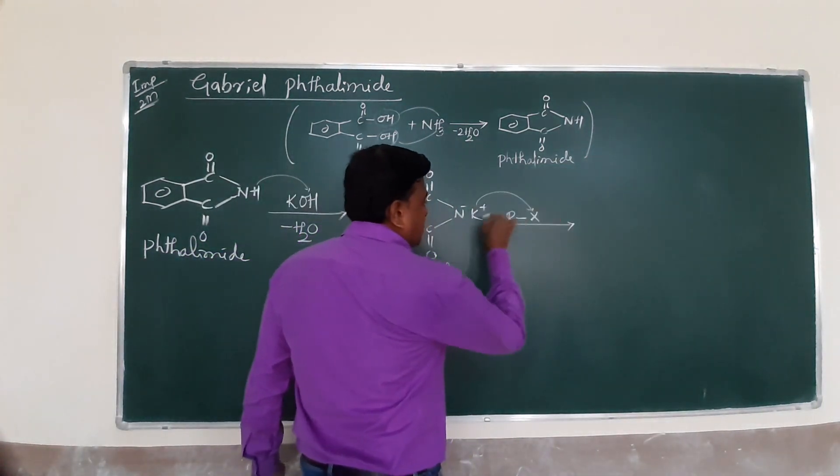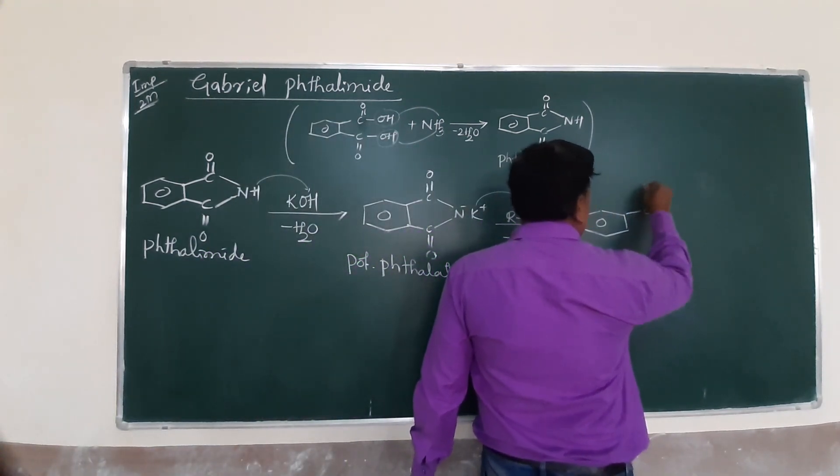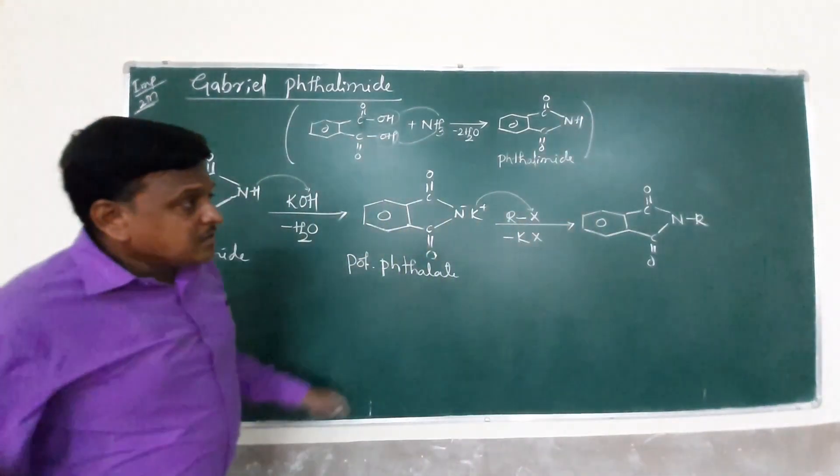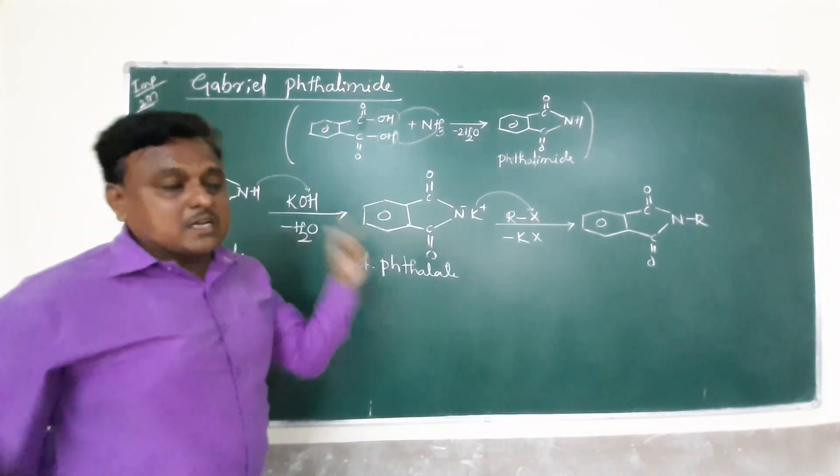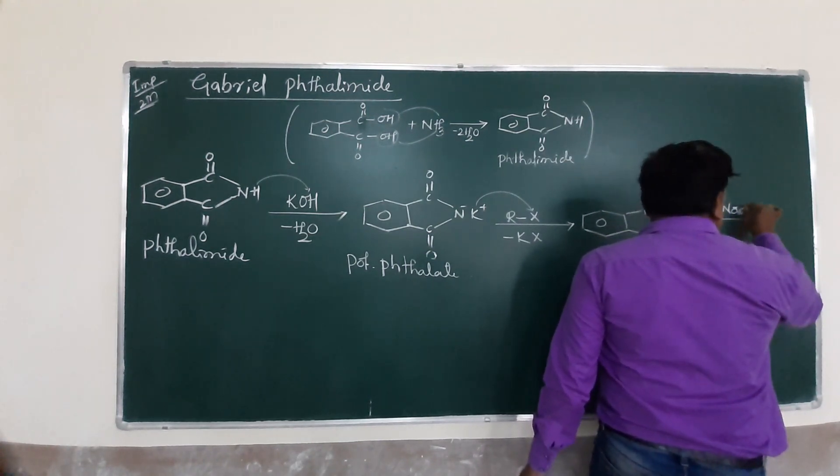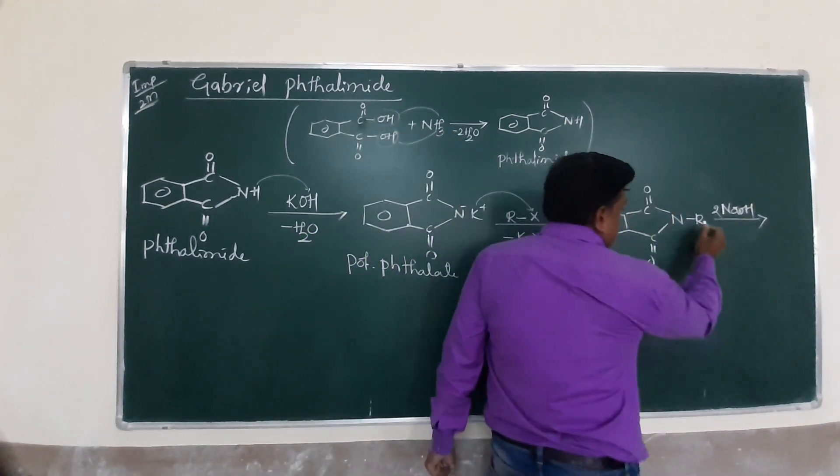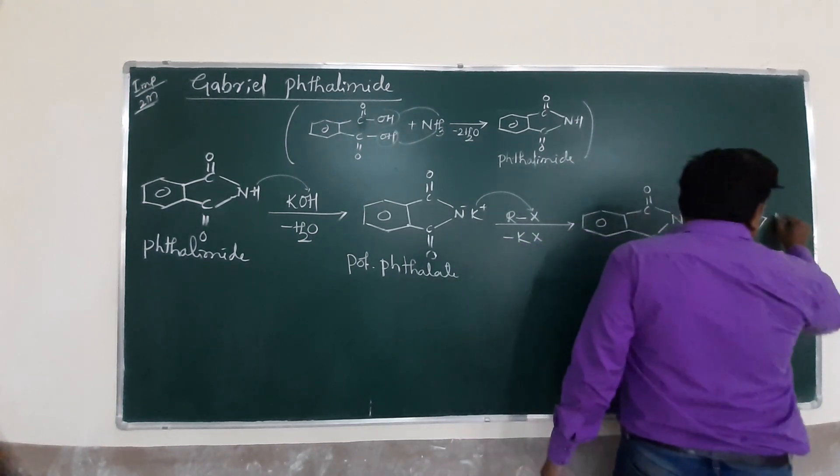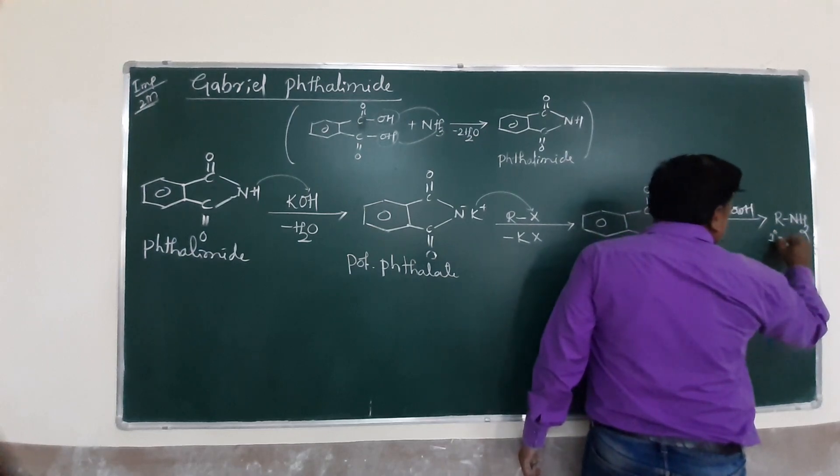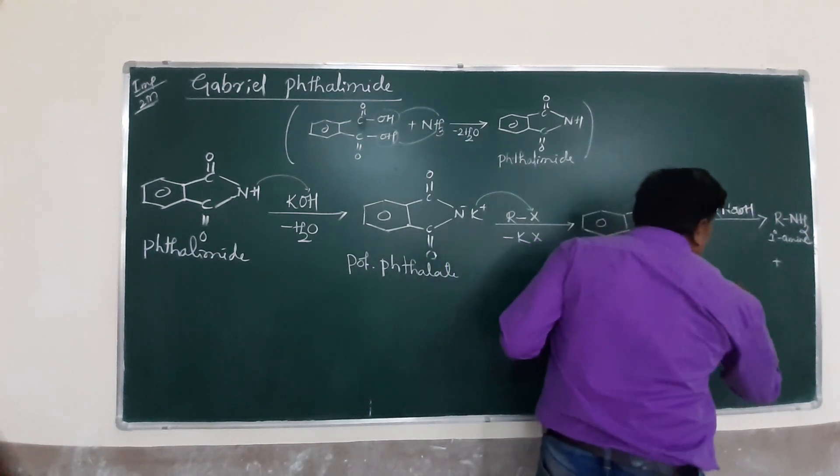Alkyl halide RX, this alkyl halide can attack. Now it undergoes reaction with alkyl halide. This is N-alkyl phthalimide. Now, it reacts with NaOH. Once it reacts with NaOH, I can consider two products. This is the formation of R-NH2, these two carbonyls, R-NH2 your target is primary amine. What remains is the remaining part.